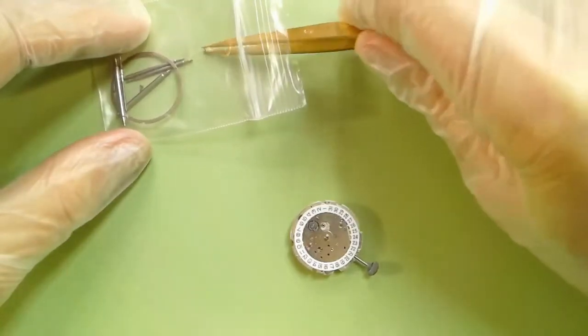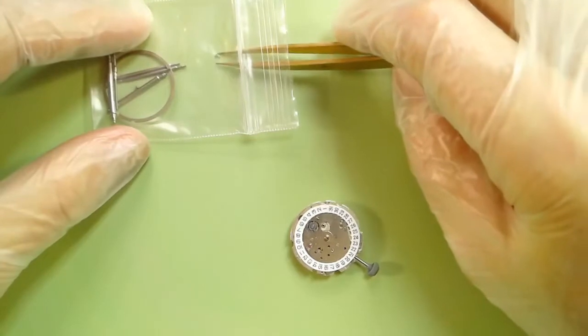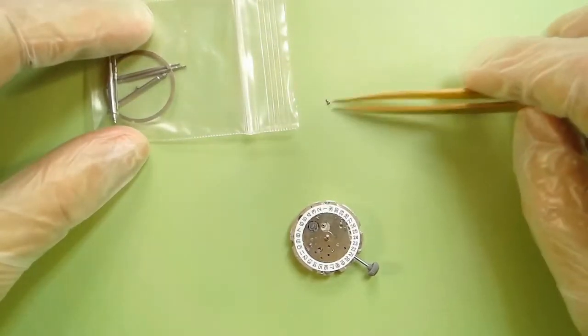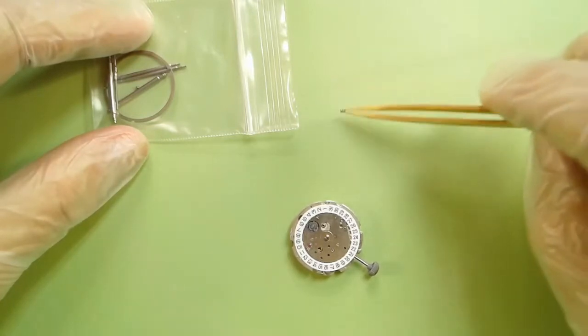Where you want to grab these little screws is by the threading. Don't grab them by the head—grab them by the threading. You get a much more secure grip and the screw has less of a tendency of flying away.